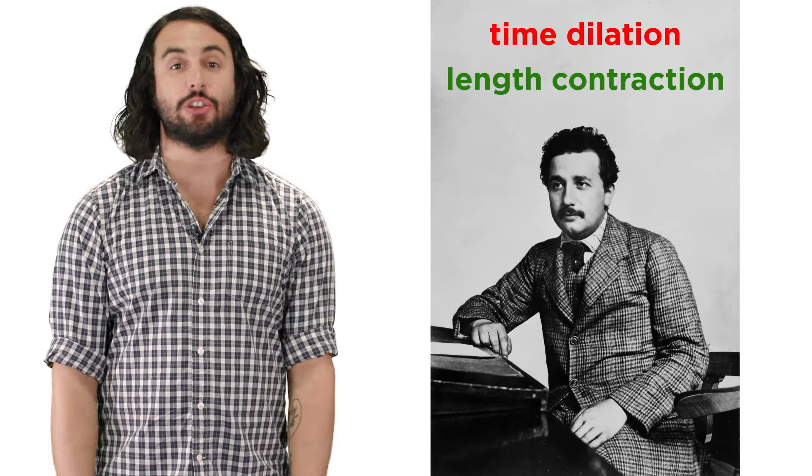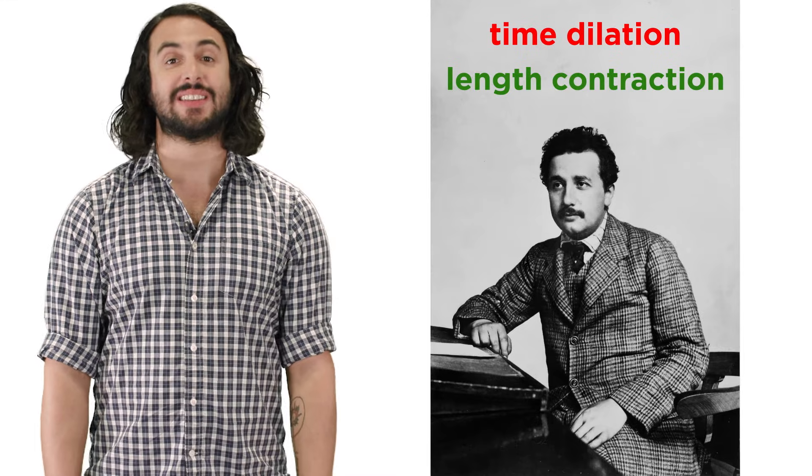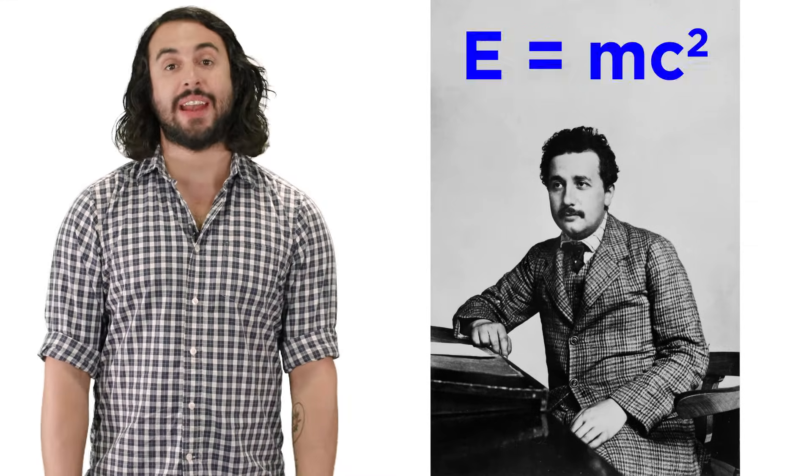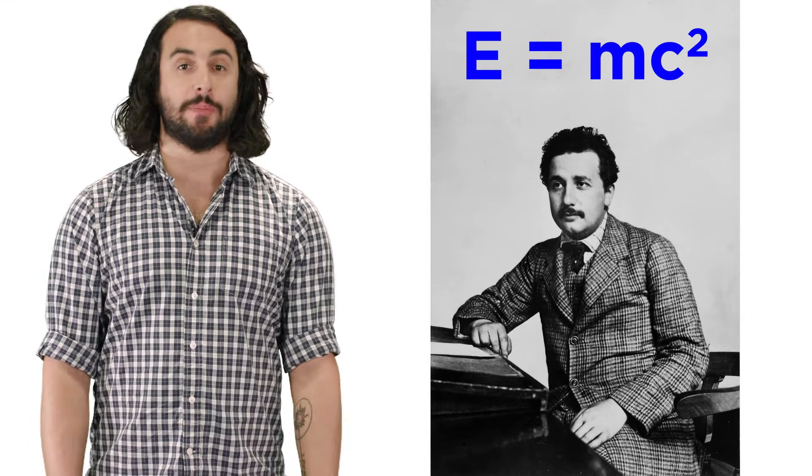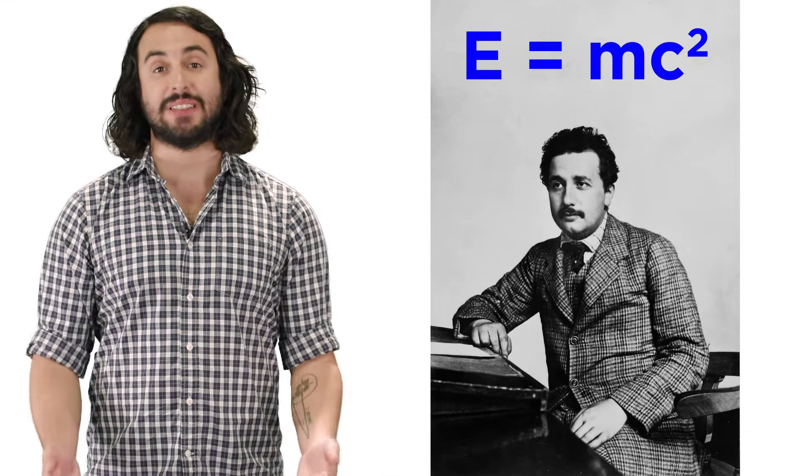Time dilation and length contraction are two of the bizarre ramifications of Einstein's special relativity, but we have one more to get through, and it comes in the form of his most famous equation, which is arguably the most famous equation in all of science, E equals mc squared.